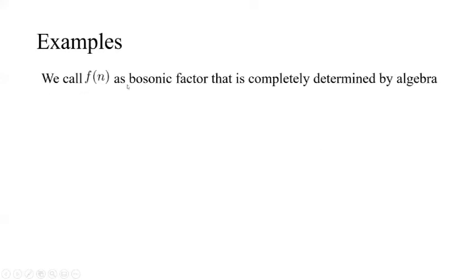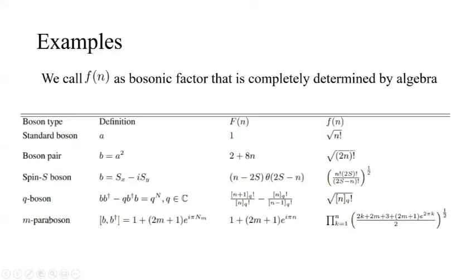Let's talk about some examples of generalized bosons. We call f(n) the boson vector, which is completely determined by algebra. The first one is standard bosons. Standard bosons should be viewed as generalized bosons. The boson pair, shown in circuit QED, is B equals A squared. Also spin S can be viewed as a boson. There's a boson from high energy called the q-boson. And there's a quasi-particle in condensed matter called the n-pair boson, originally found in the Ising cube.